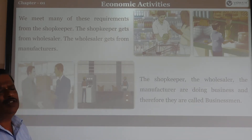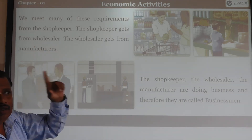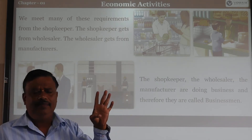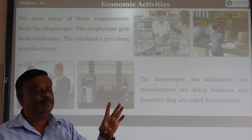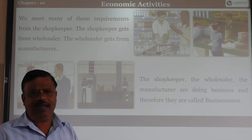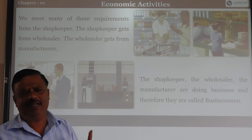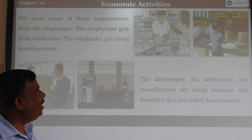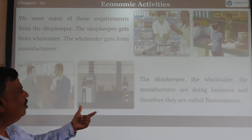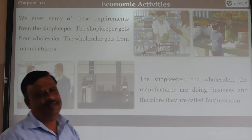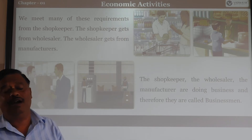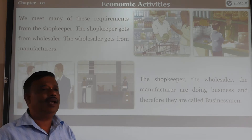The things come to the shopkeeper — how? The shopkeeper gets these things from the wholesaler. How does the wholesaler get them? The wholesaler gets from the manufacturer. So shopkeeper, wholesaler, and manufacturer — these three persons' activities are very essential to us. These activities are called economic activities. Those doing shopkeeper work, wholesaler work, and manufacturer work are called businessmen, and their work is known as economic activities.